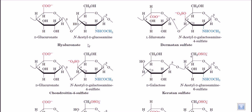Now let us talk about chondroitin sulfate. Chondroitin sulfate is made up of glucuronic acid and N-acetyl glucosamine, but it is slightly different from hyaluronic acid because in this case we find N-acetyl galactosamine instead of glucosamine.